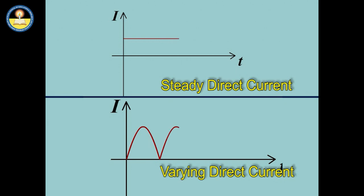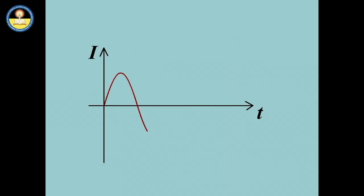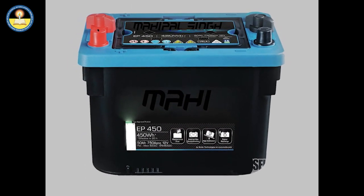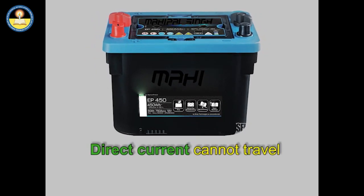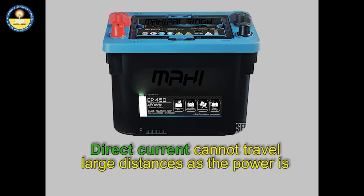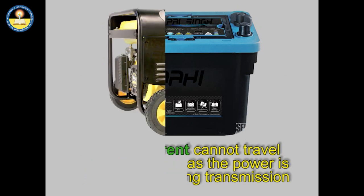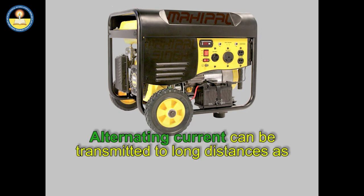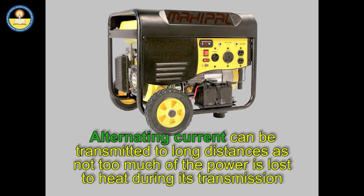Until 1880, direct current was used for electrical power distribution. But now, alternating current is being used for electrical power distribution. Each battery is designed to produce only a single voltage, and the direct current generated by a battery cannot travel large distances as the power is lost to heat during transmission. But AC can be transmitted to long distances as not too much of the power is lost to heat during its transmission.